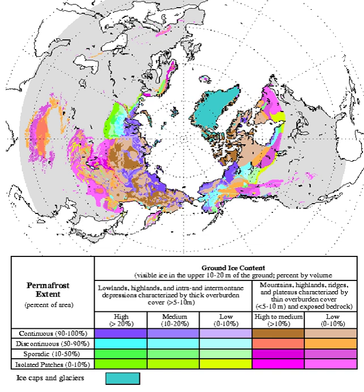Beneath the active layer, annual temperature swings of permafrost become smaller with depth. The deepest depth of permafrost occurs where geothermal heat maintains a temperature above freezing. Above that bottom limit there may be permafrost whose temperature doesn't change annually — isothermal permafrost.